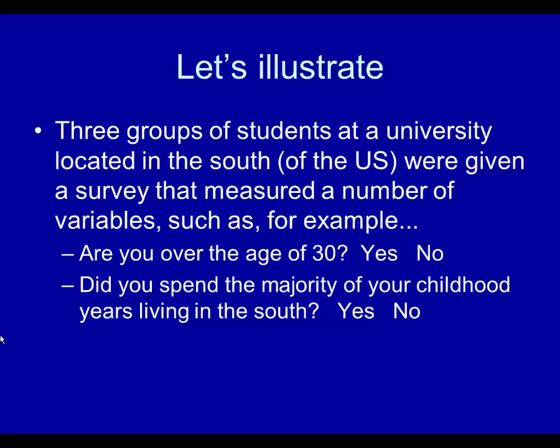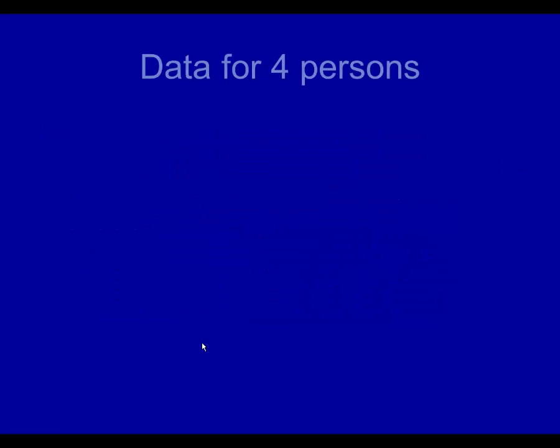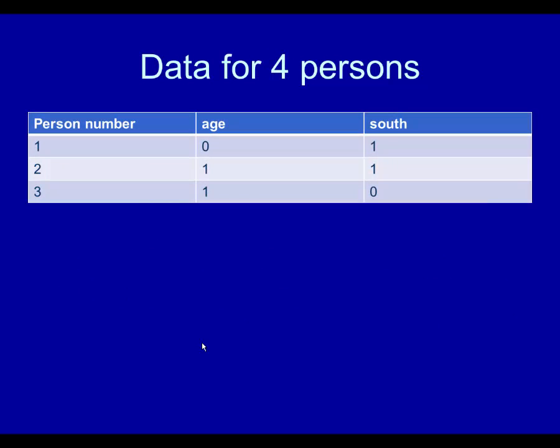Let me just give you a quick example here. Three groups of students at a university located in the south were given a survey that measured a number of variables such as, for example, are you over the age of 30? Yes or no? Did you spend the majority of your childhood years living in the south? Yes or no? This is something I just recently used. So you notice that we did not measure age in years in this particular example. Typically you would measure age by saying, what is your age? Blank years. That's different. We're using it here simply as yes or no. We've converted it to basically a nominal variable because it only has two categories. Same is true for living in the south.